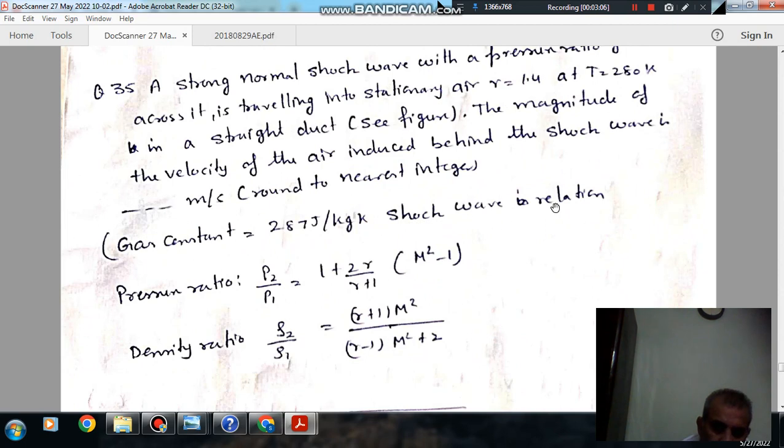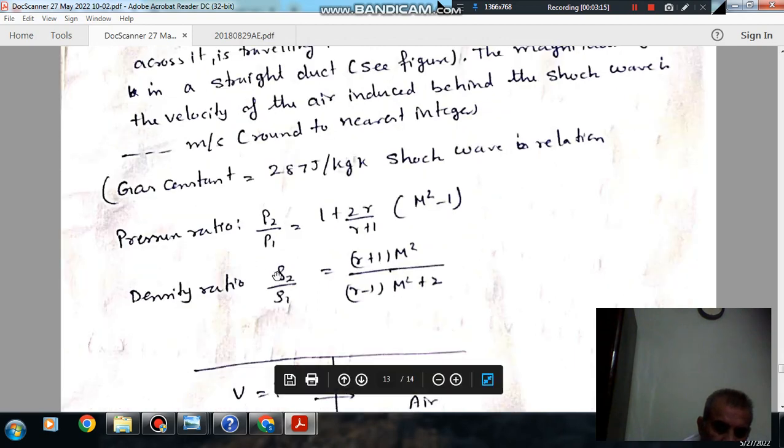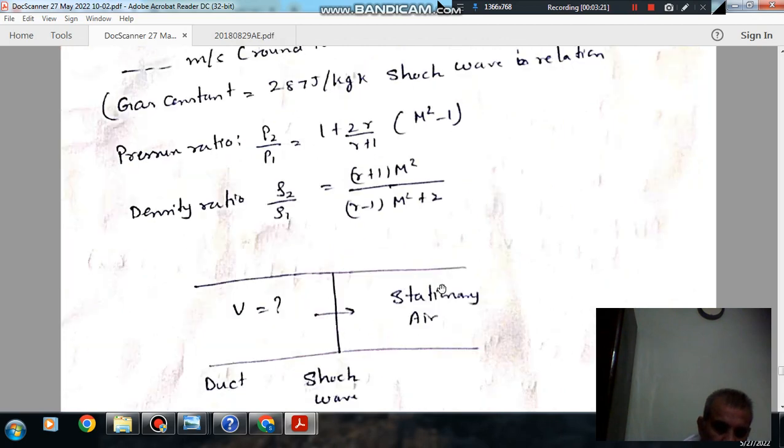The shock wave relations: pressure ratio P2 by P1 equals 1 plus 2 gamma divided by (gamma plus 1) times (M squared minus 1). Density ratio rho2 by rho1 equals (gamma plus 1) M squared divided by (gamma minus 1) M squared plus 2.